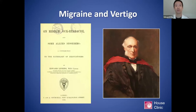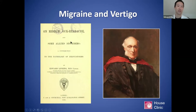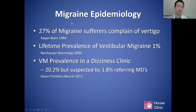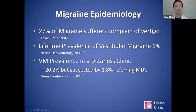The relationship between migraine and vertigo is not new. As far back as 1873, British neurologist Edward Leving found an association between migraine and vertigo. Vertigo is common in migraine in general — one epidemiologic study found up to 27% of migraine sufferers complain of some form of vertigo. A German study found the lifetime prevalence of vestibular migraine is 1%, and the prevalence in dizziness clinics may be as high as 20%, but less than 2% of referring MDs may suspect it.